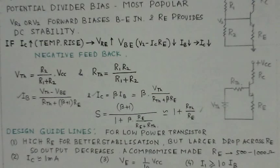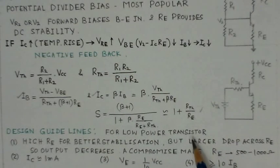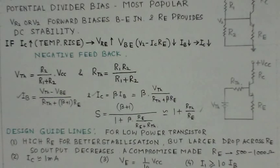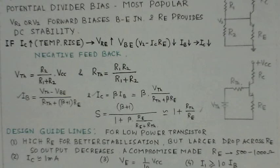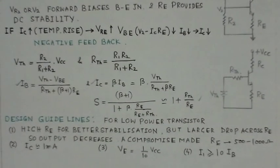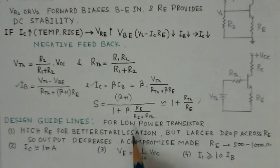The stability factor for this potential divider circuit is very low. The ideal stability factor is considered to be of the order of unity, but that value is never truly achieved. Even a typical value around 10 for the stability factor is considered quite acceptable. There are certain design guidelines for designing this kind of bias arrangement.